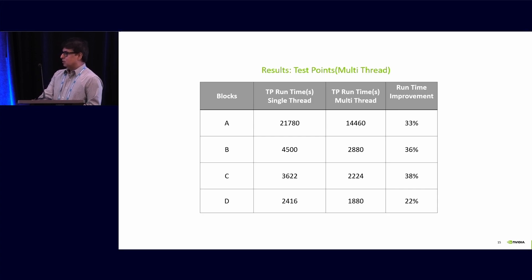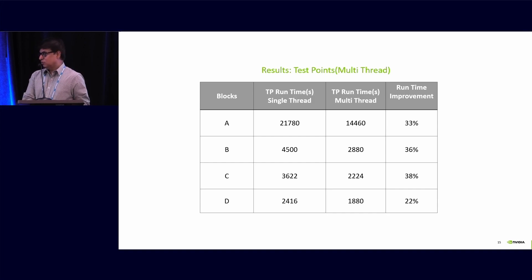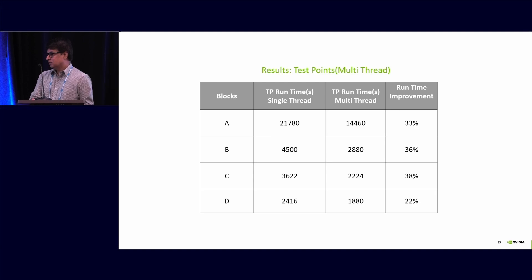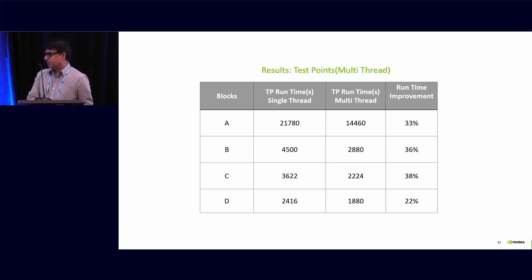There are some complex blocks which take a lot of TP analysis runtime. In those cases, we enable multi-threading. Multi-threading uses more licenses, so we do not enable it by default — it is enabled case-by-case where the runtime is high. Once we enable multi-threading, the TP analysis runtime comes down by 30 to 40% across different-sized blocks.